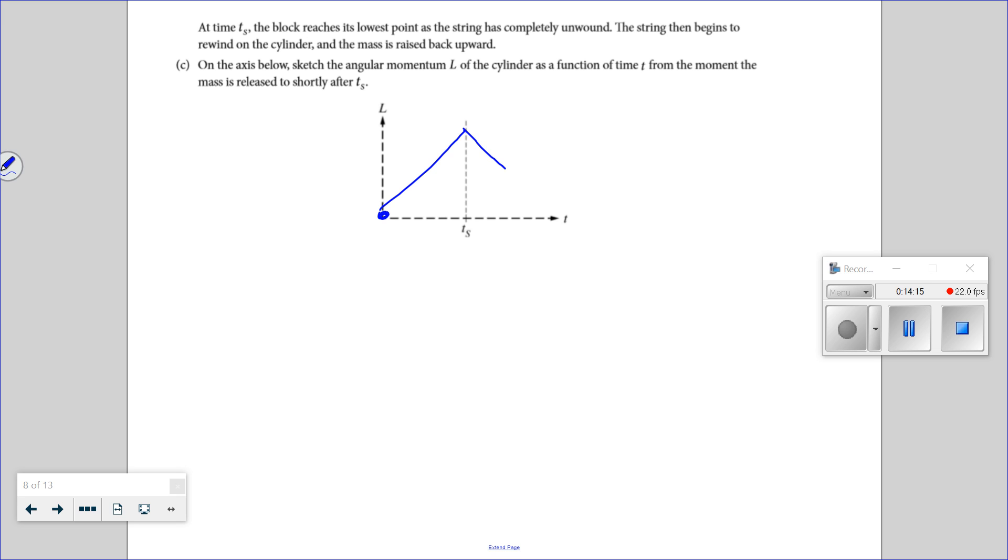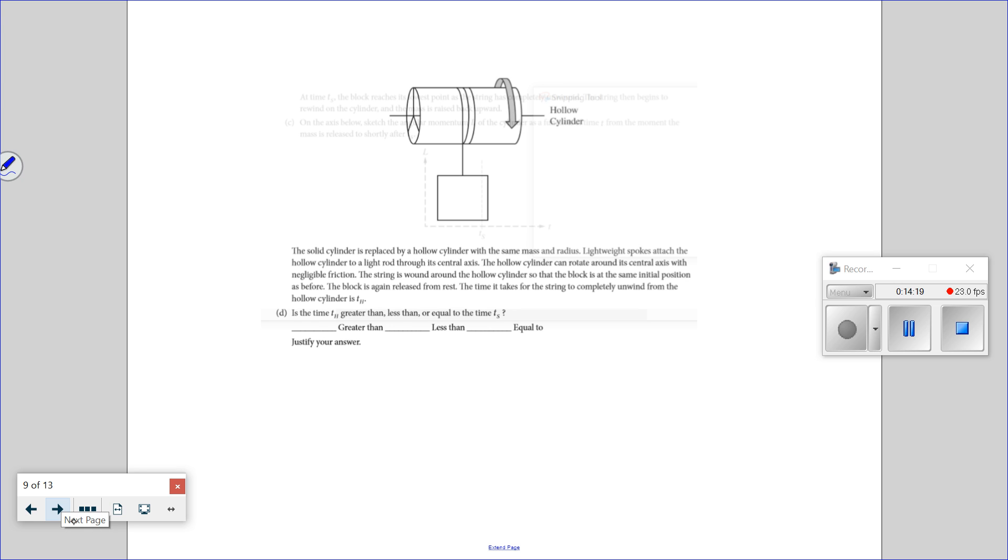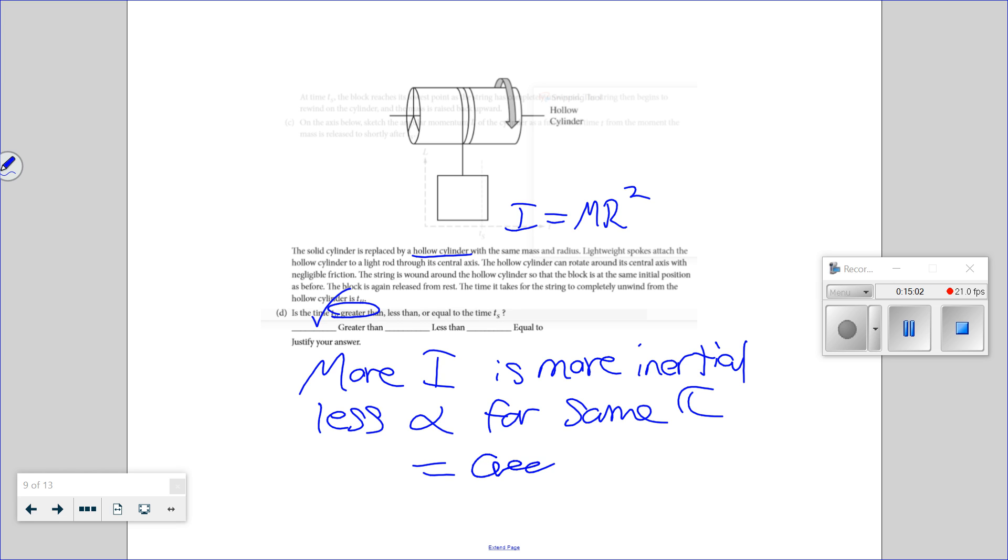The cylinder is replaced by a hollow cylinder where your I is now MR squared, not one half. The hollow cylinder will rotate on the central axis with negligible friction. Same initial position. The time it takes, with more inertia, it's going to take longer time. TH for hollow, it's going to take greater time. More I, more inertia, less alpha for same torque. Greater time. I'll make sure that's a reasonable length video.